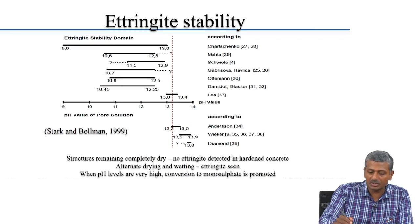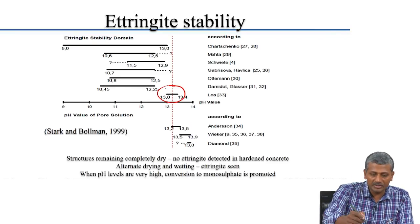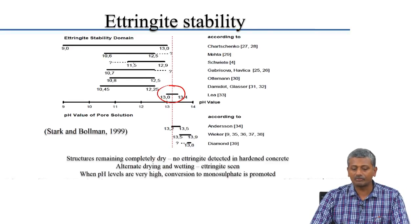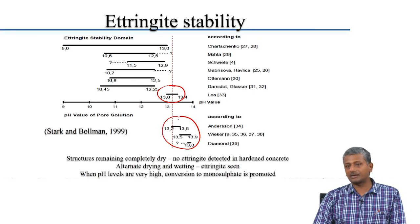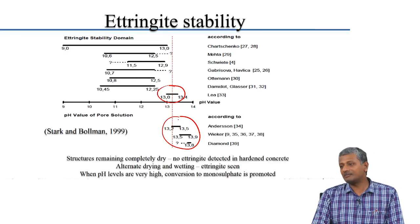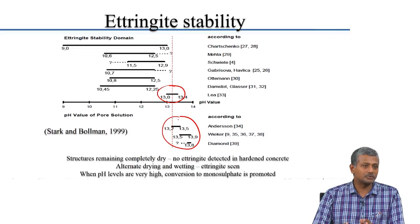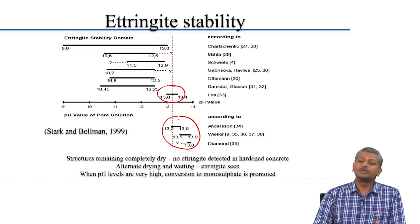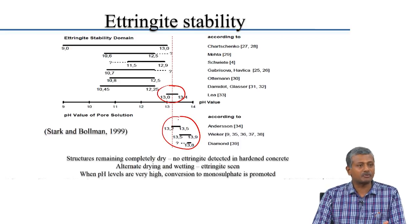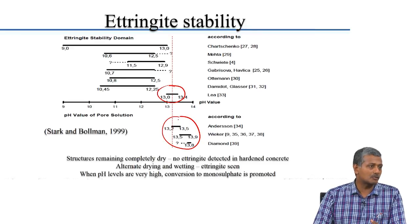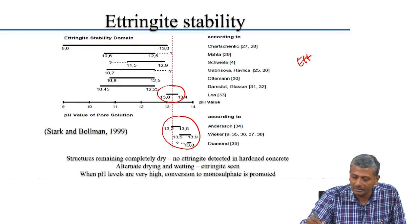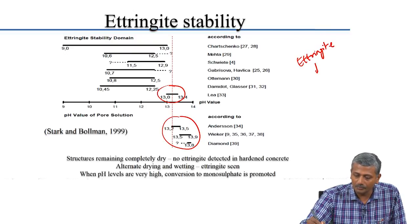The stability of ettringite depends on the pH levels in a particular environment. The pH range of stability of ettringite is generally between 9 and 13, though different researchers have provided various ranges. When the surrounding conditions become acidic, ettringite may not be very stable. In an acidic environment, ettringite may readily convert to gypsum and aluminium hydroxide — especially if carbonation is also happening, it may form calcium carbonate phases along with aluminium hydroxide and gypsum.